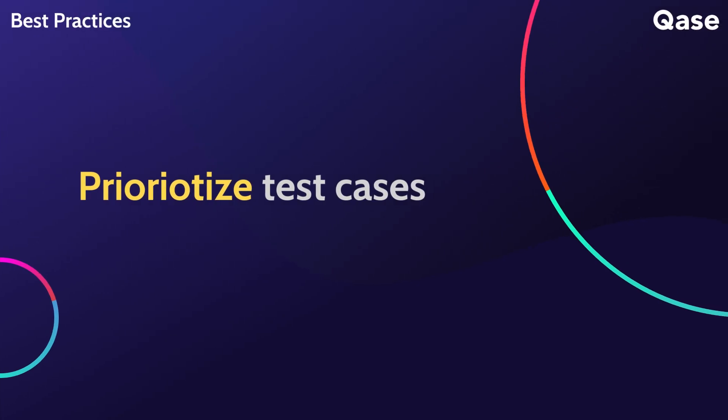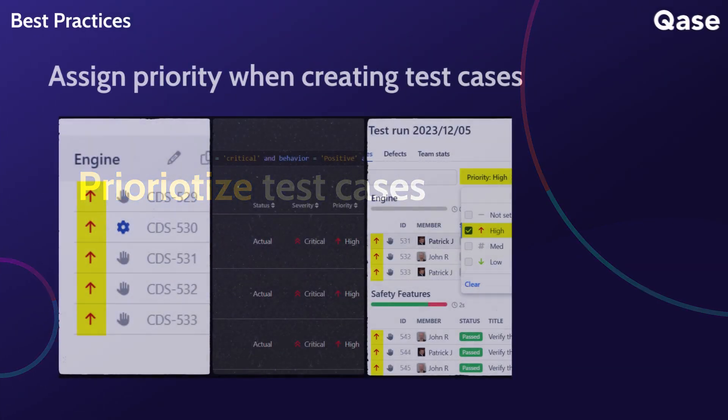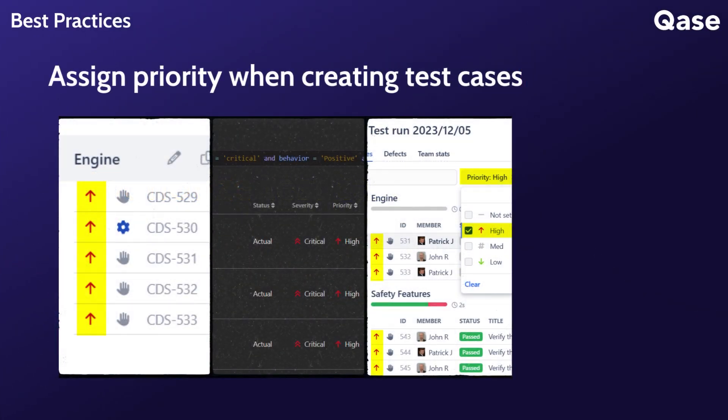Prioritize test cases based on criticality and impact on the system. This will ensure that high-priority test cases are executed first.